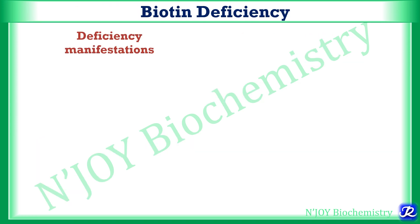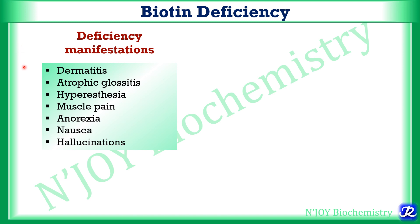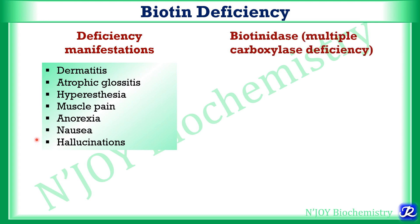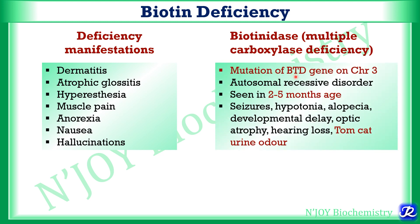Biotin deficiency can be manifested as dermatitis, atrophic glossitis, hyperesthesia, muscle pain, anorexia, nausea, and hallucinations. If there is multiple carboxylase deficiency due to mutation of the BTD gene on chromosome 3 — an autosomal recessive disorder — it is seen in 2 to 5 months of age. Manifestations include seizures, hypotonia, alopecia, developmental delay, optic atrophy, hearing loss, and tomcat urine odor.